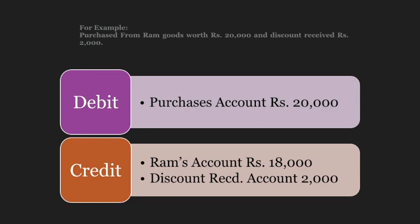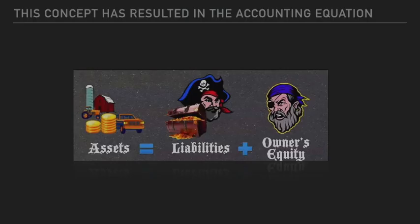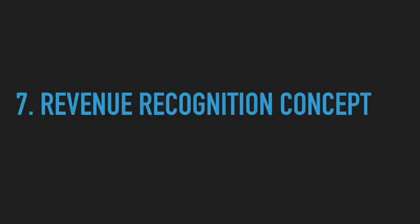The result of the dual aspect concept is the accounting equation: Assets = Liabilities + Owner's Equity, which forms the basis of the balance sheet.